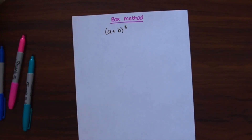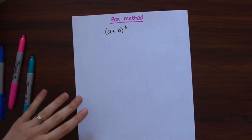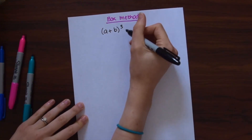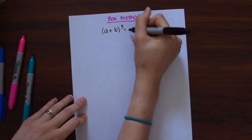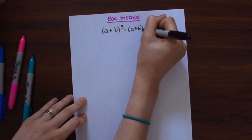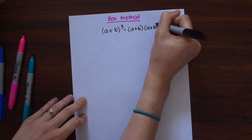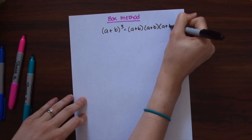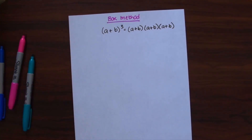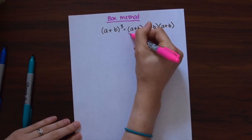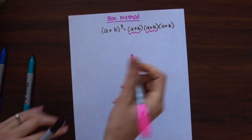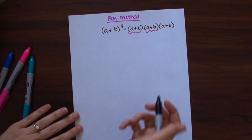So our first method is the box method, and the first thing we're going to want to do is expand (a+b) cubed. So (a+b) cubed is really just equal to (a+b) times (a+b) times (a+b). So we're going to be making two boxes to multiply this entire thing together. For our first box we're going to be multiplying (a+b) times (a+b), just taking two of them at a time.